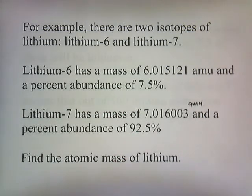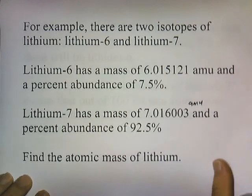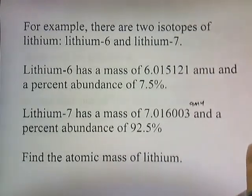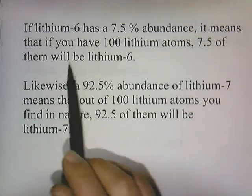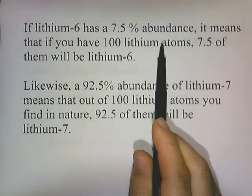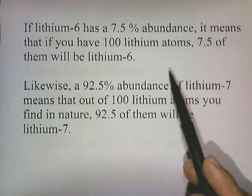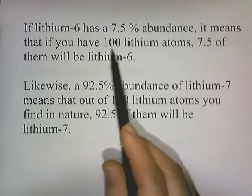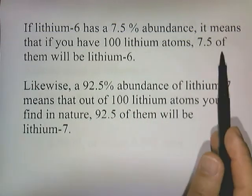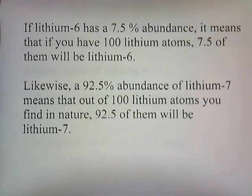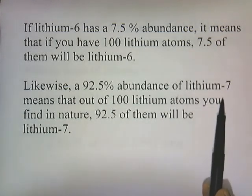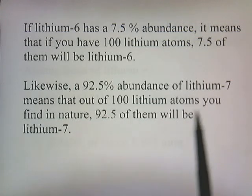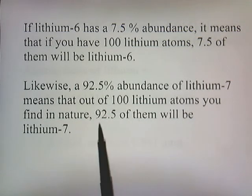And the question is, what's the atomic mass of lithium given these facts? And here's how we figure it out. But first, let me tell you what percent abundance means. If lithium-6 has a 7.5% abundance, it means that if you had 100 lithium atoms, out of that 100 lithium atoms, 7.5 of them would be lithium-6. And likewise, a 92.5% abundance of lithium-7 means that out of 100 lithium atoms that you find in nature, 92.5 of them will be lithium-7.